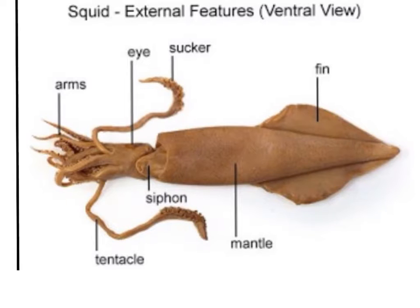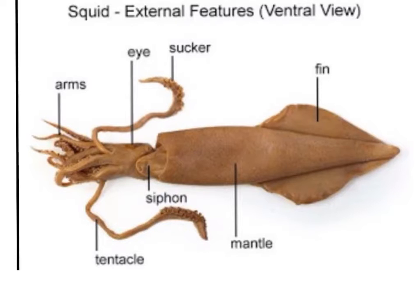Squids are some of the most effective swimmers in the ocean. They can hover motionlessly or achieve speeds of over 18 miles per hour. To evade predators, the squid can maneuver quickly and also has the ability to secrete a cloud of ink as a smoke screen. The ink contains a pigment called melanin, which acts as camouflage and tends to be distasteful and disagreeable to fish that may want to feed on the mollusc.